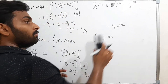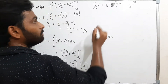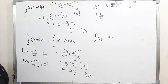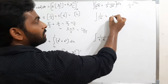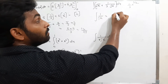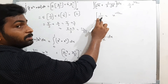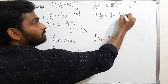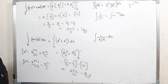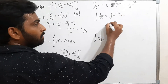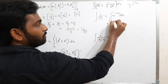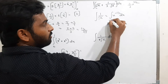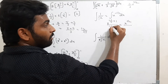Now, what is the integration of 1/√x? We write 1/√x as 1/x^(1/2), and moving x^(1/2) to the numerator gives x^(-1/2). The integration of x^(-1/2) dx uses the formula: x^(-1/2 + 1) divided by (-1/2 + 1).